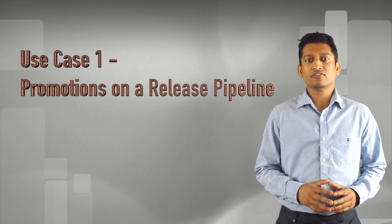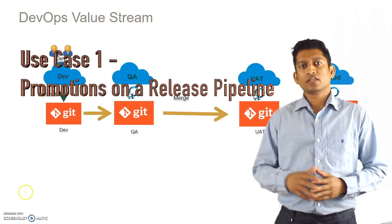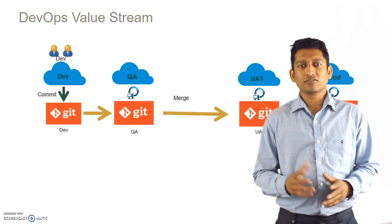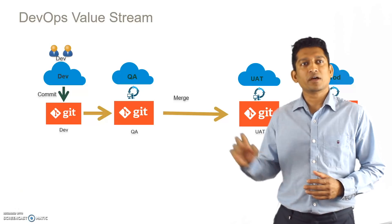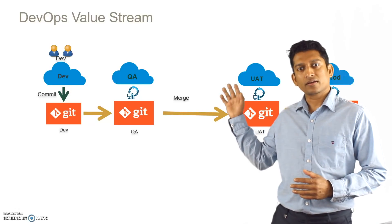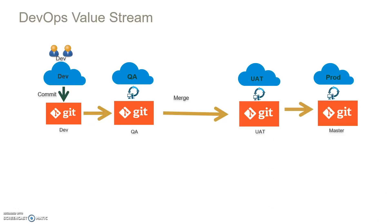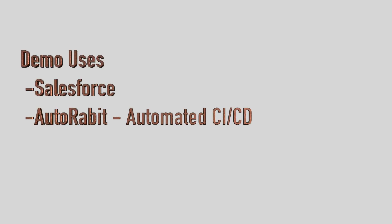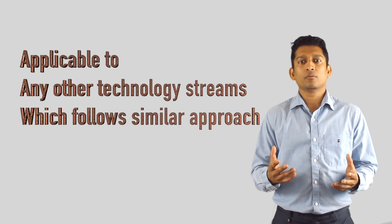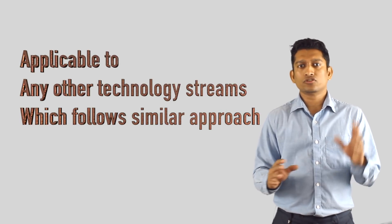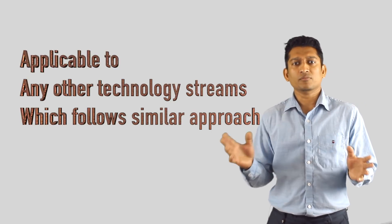Without further ado, let's jump right into the first use case. The first use case is promotions on a release pipeline. This is how a basic release pipeline looks — you've got Dev, QA, UAT, and Prod. I'm using Salesforce and AutoRabbit as the CI/CD automation tool for this example, but you'd be able to apply this to any other technology stream that uses a similar process.